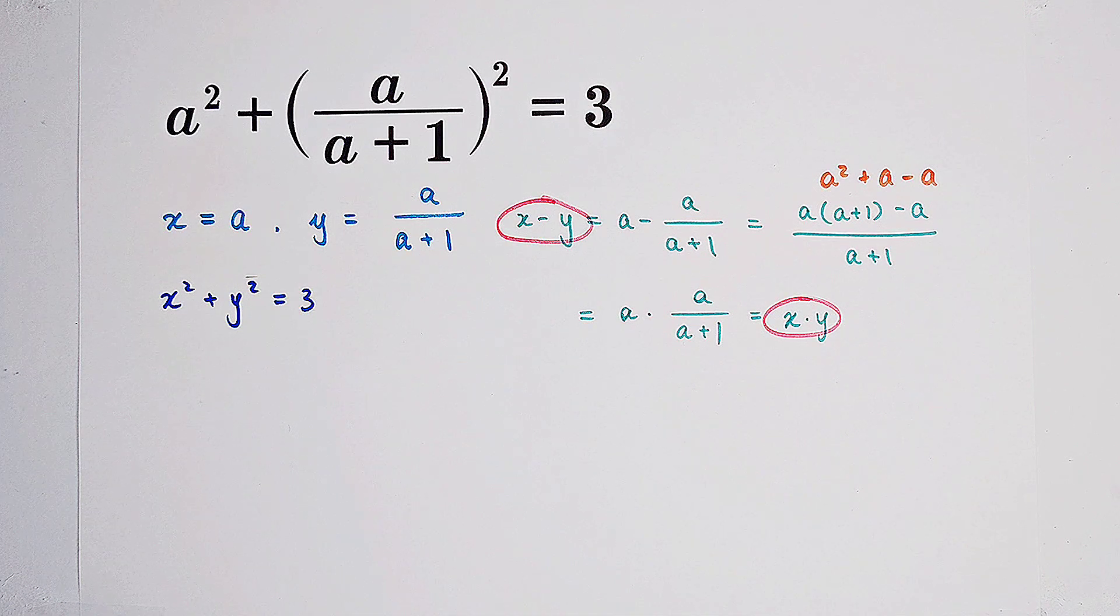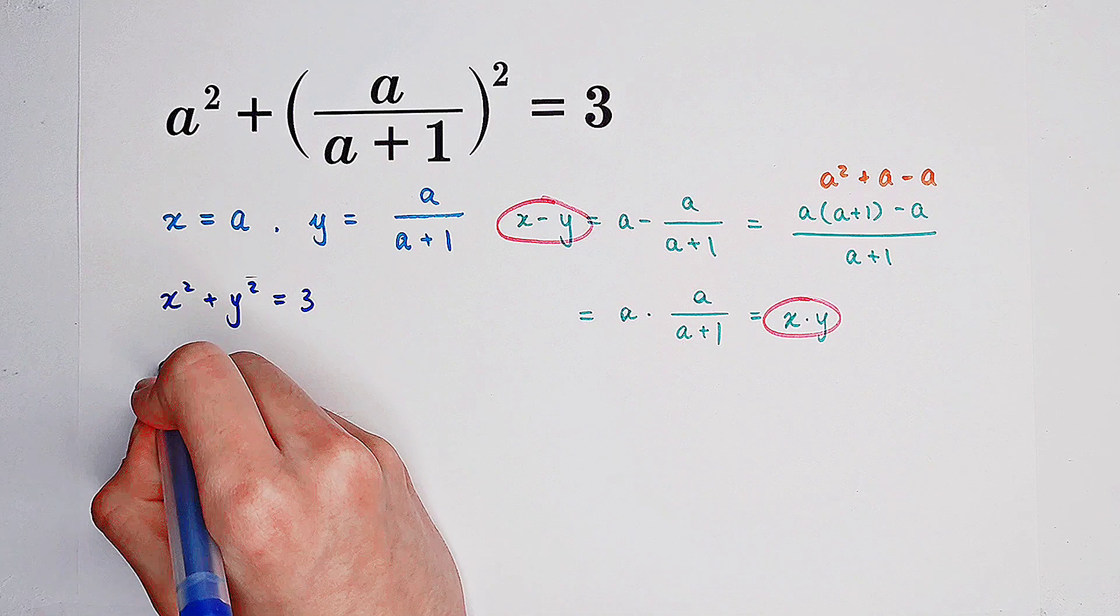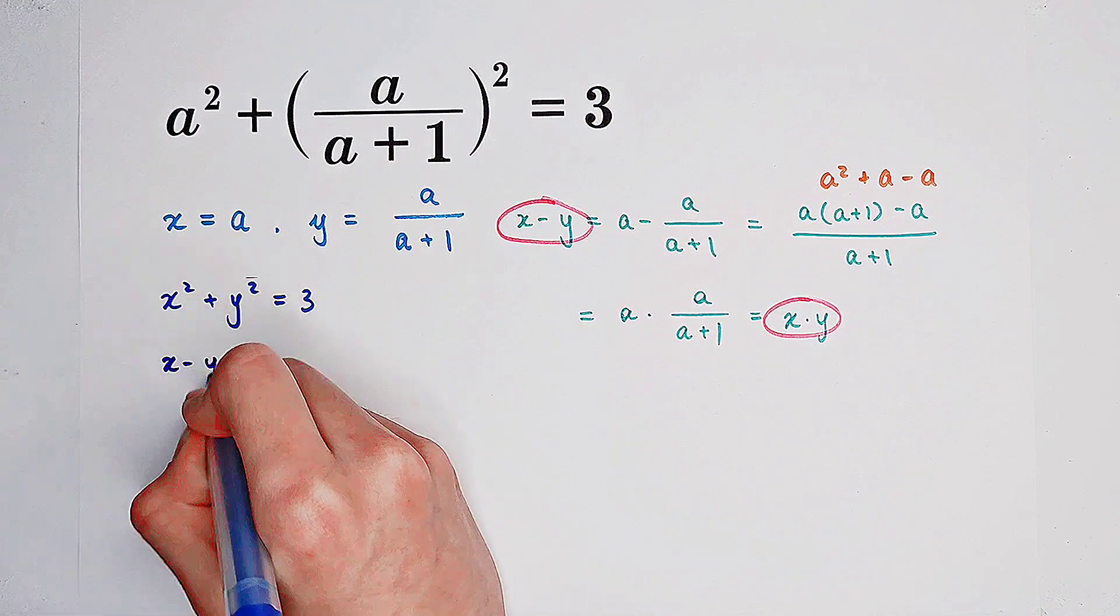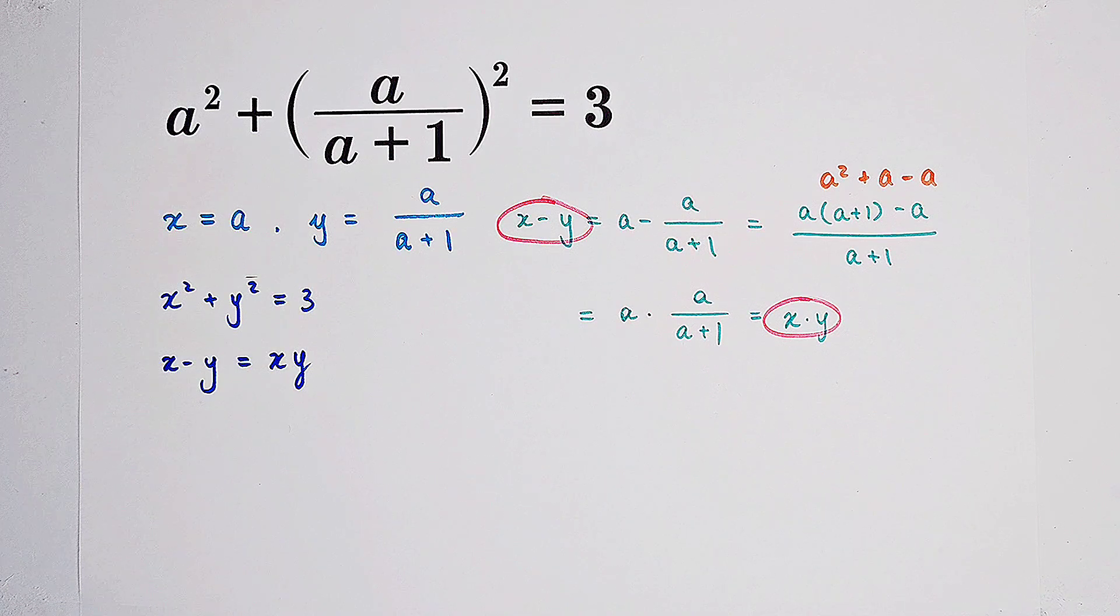How wonderful. So the second relationship between x and y is x minus y equals xy. Very good. We can solve for x and y.